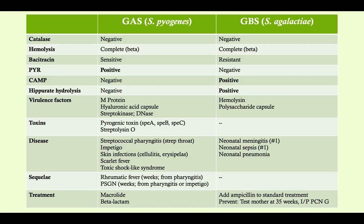By definition, both group A and group B strep are catalase negative. When dealing with gram positive cocci, if they're catalase positive it's always staph; if they're catalase negative it's always strep. By definition, they're also both beta hemolytic, so you'll see a full zone of clearing around the colonies on sheep blood agar — a very important test to distinguish between different variants of streptococci.